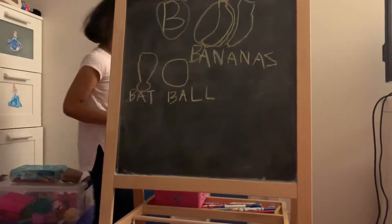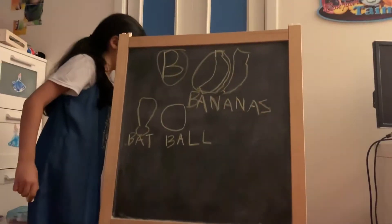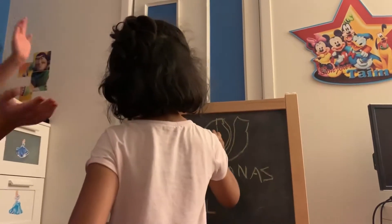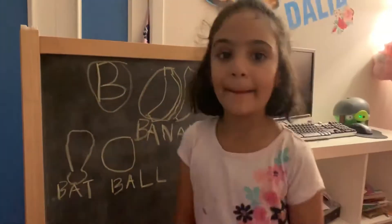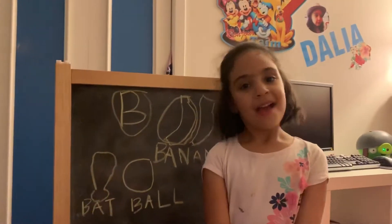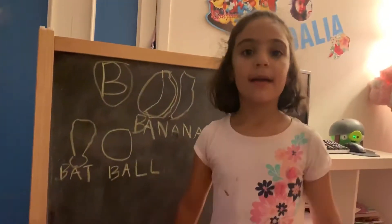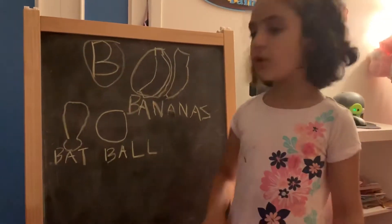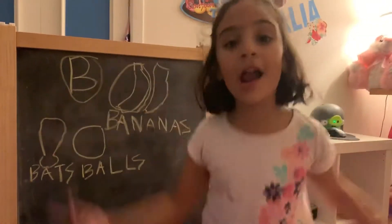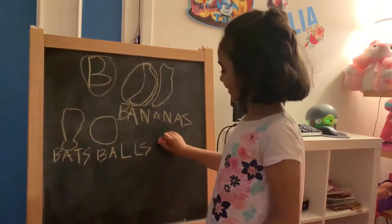Daddy is going to say banana, bat, and ball. Come on, Daddy. You have to say banana and bananas. Bat, bat, ball, balls. Banana — for one banana; bananas — for two bananas or more than two. Bat for one bat; bats for more bats. Ball for one ball; balls for a lot of balls. That's all. Good job!